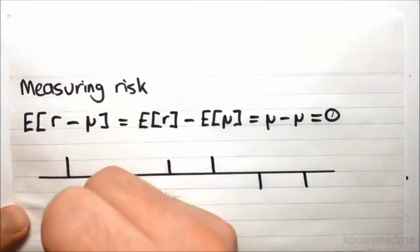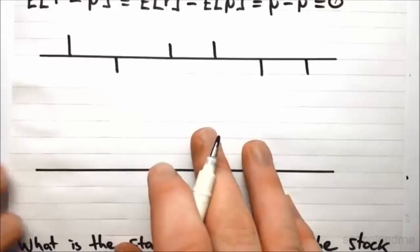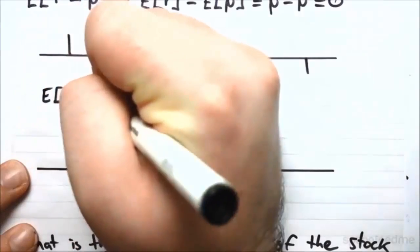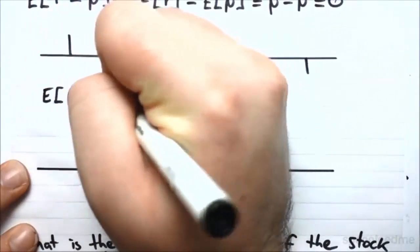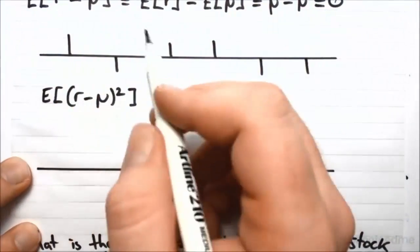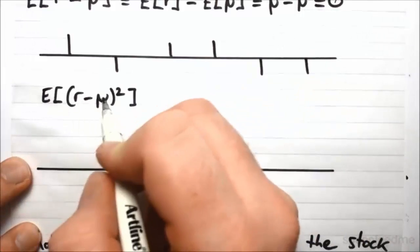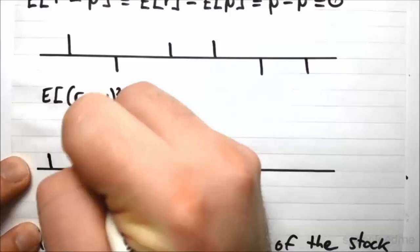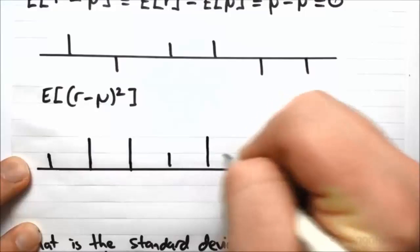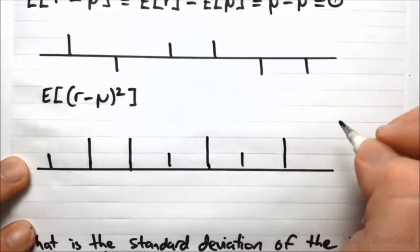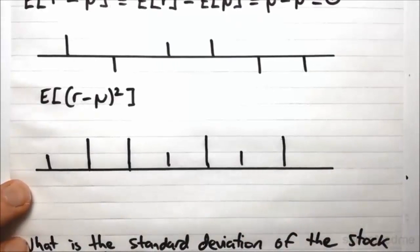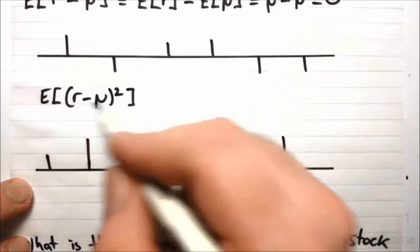However, somebody then had the clever idea to do the following. Say we got the expected value of that same difference, but then we squared it. Now if you do that, instead of having these positive and negative numbers which will cancel each other out, the fact that they're squared means they all have to be positive. So you just get all these positive numbers, which you multiply by probabilities, which in turn have to be positive because you can't have a negative probability. And so you've just got a sum of a bunch of positive numbers, which is a positive number. So this actually does tell us something.